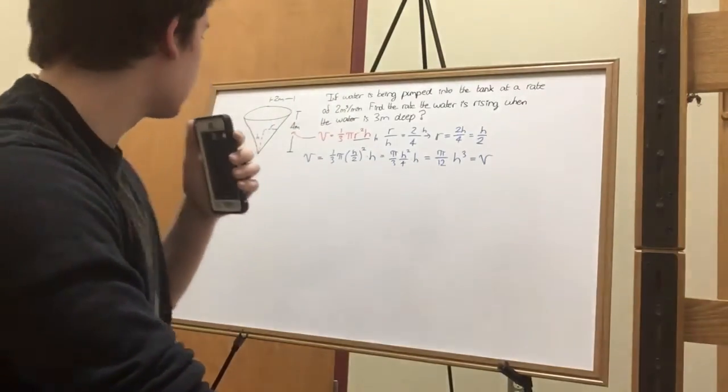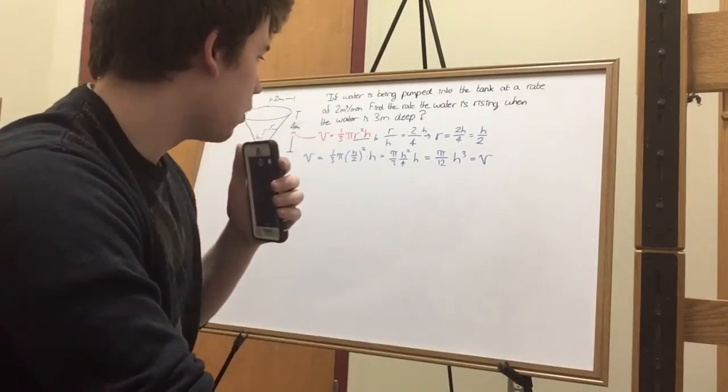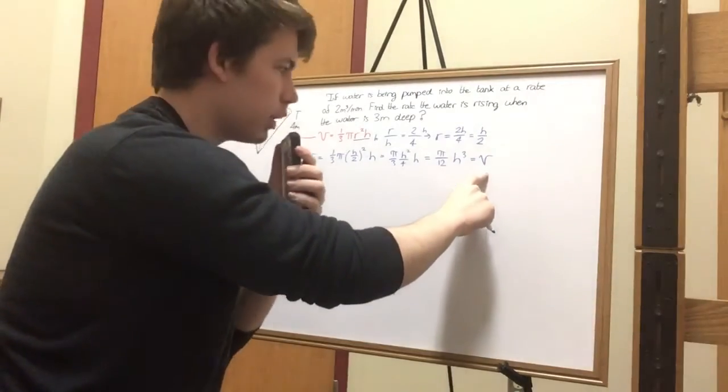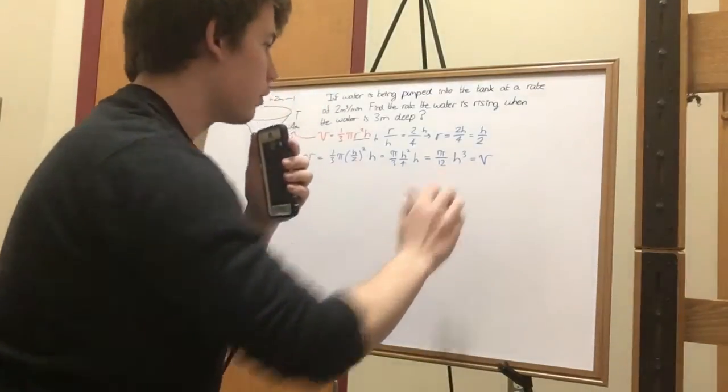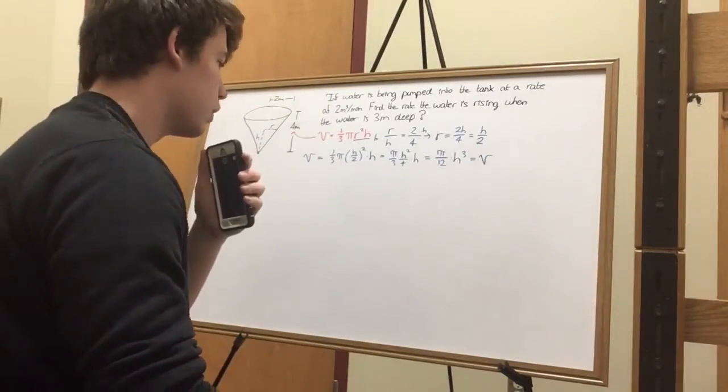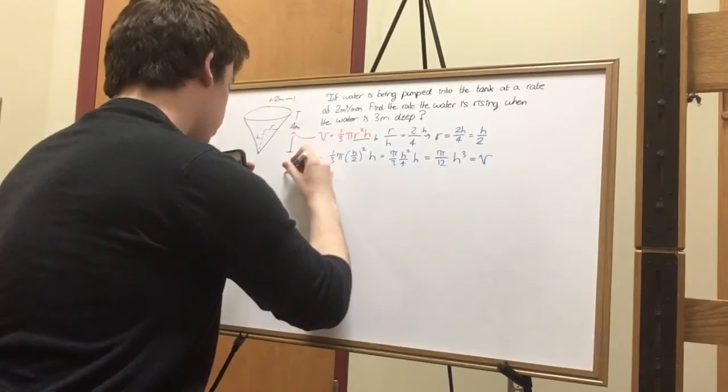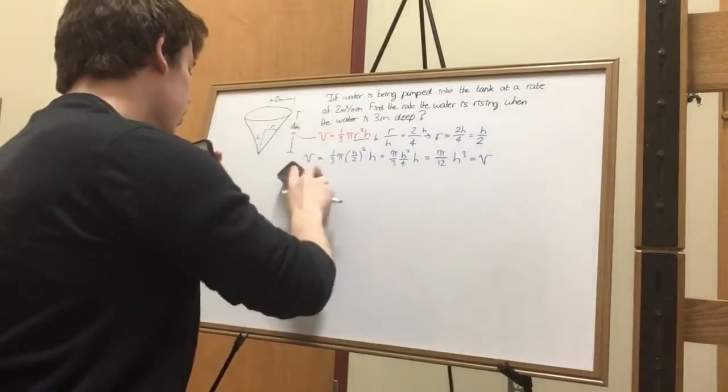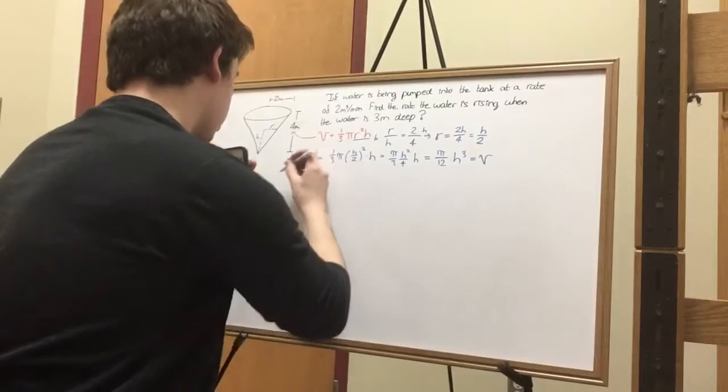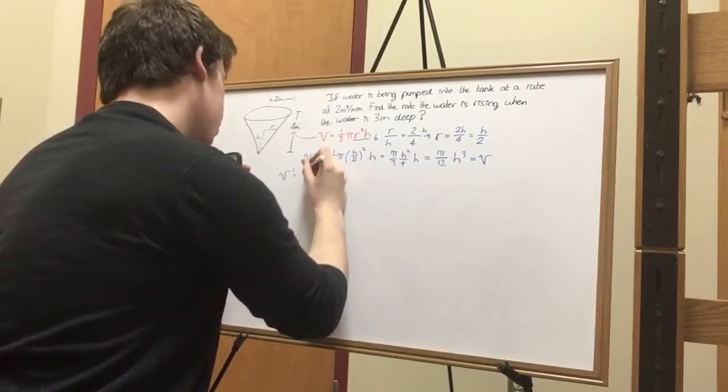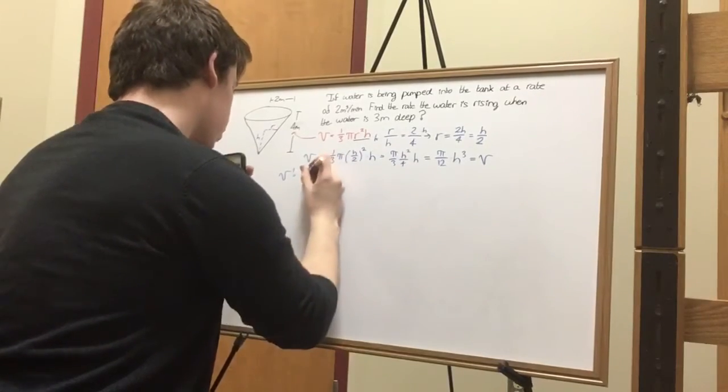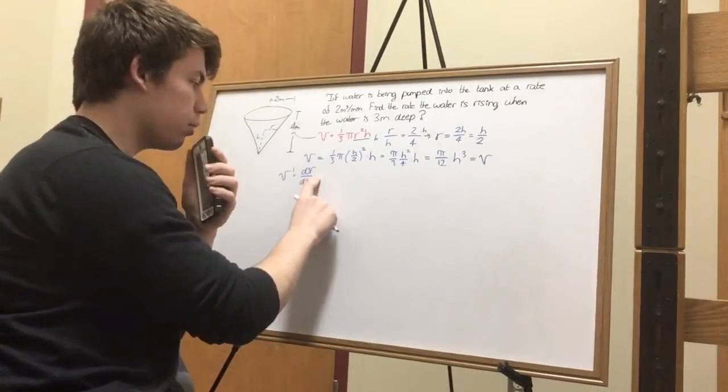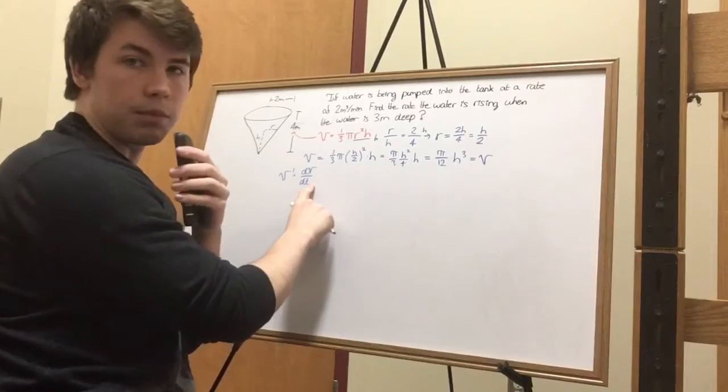Oh we're getting close, boys and girls. We are reaching a solution. Now we have our volume equation right there. This is where things get spicy. We shall take the derivative of this equation right here. And when we do that, V prime equals dv over dt, which is the change in rate of the volume over the change in time. That's important.